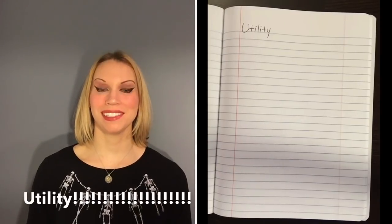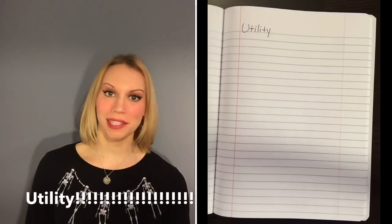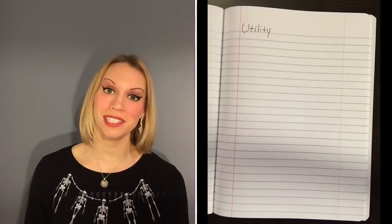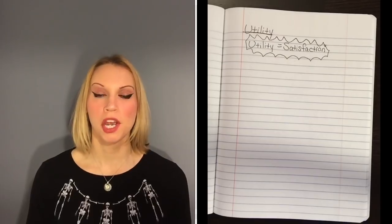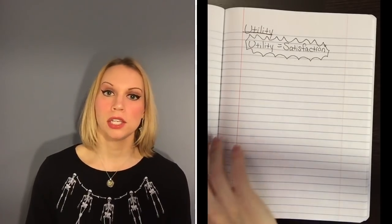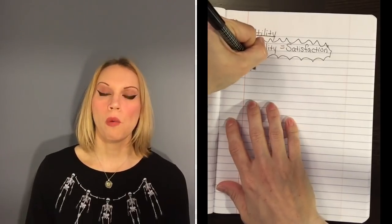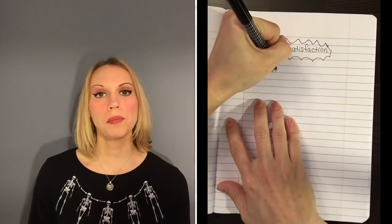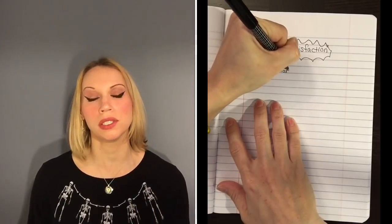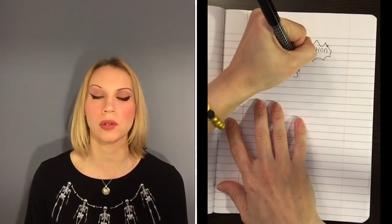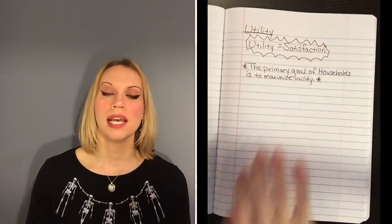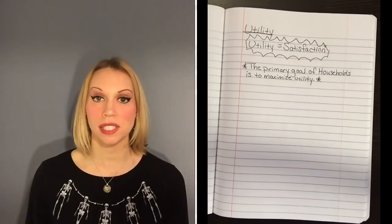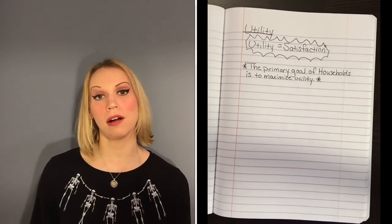Hey guys, it's Ms. Benson. Today we're going to talk about a really exciting topic called utility. Utility is one of those key words in economics that means something specific. Remember at the beginning of the class, you learned about the word marginal and how that means extra or additional? Well, when you hear the word utility, I want you to think satisfaction. The primary goal of households and consumers in the Circular Flow model is to maximize their utility — to get the most satisfaction that they can whenever they spend their hard-earned money.